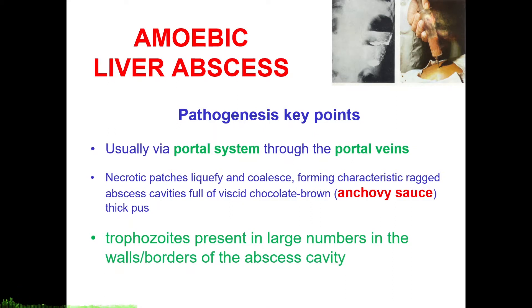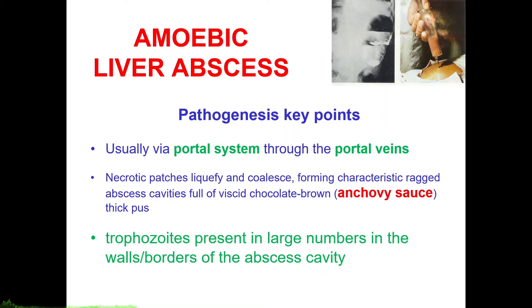Amoebic liver abscesses usually start as intestinal amoebiasis, but reach the portal system through the portal veins via the hematogenous route through the capillaries. Once they reach the liver, necrotic patches liquefy and coalesce, forming characteristic ragged abscesses full of anchovy sauce or viscid chocolate-brown pus, which contains degraded liver tissues, clots of blood, or streaks of blood.